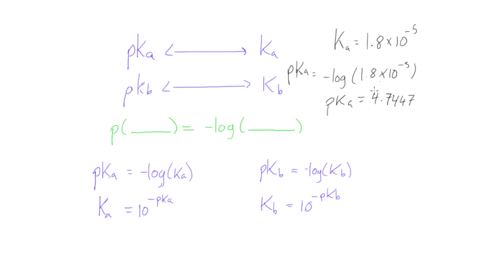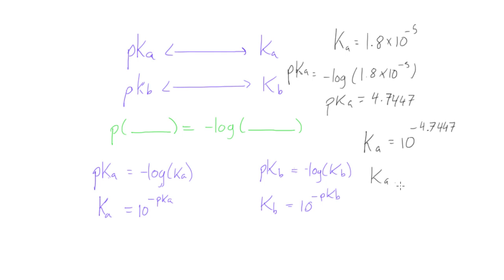Now let's double check — say we want to find the KA given the PKA. We can do exactly what we said: KA is equal to 10 to the negative PKA, so it'll be 10 to the negative 4.744... We punch this in our calculators, and again we'll find KA is equal to 1.8 times 10 to the negative 5. You can do this with any KA and PKA, or any KB and PKB — it's all the same.